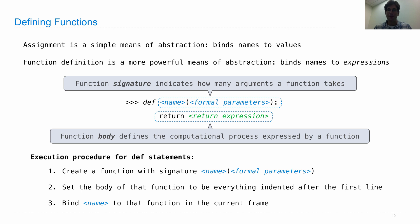The execution procedure for def statements is always the same. The most important piece is step two: we set the body of the function to be everything indented after the first line — but it does not say we actually execute that body. So when a def statement is executed, for example 'def square(x): return mul(x, x)', no multiplying actually happens. The body just gets squirreled away as part of the function without actually getting executed until the function is called.